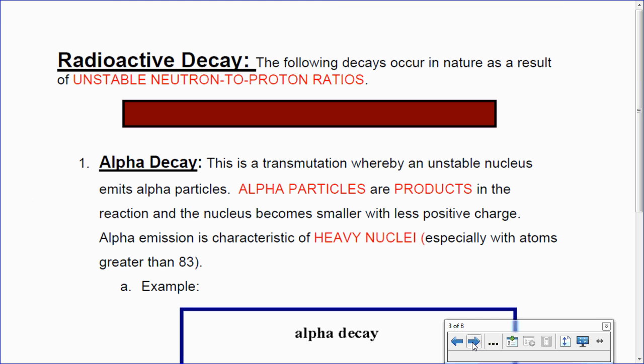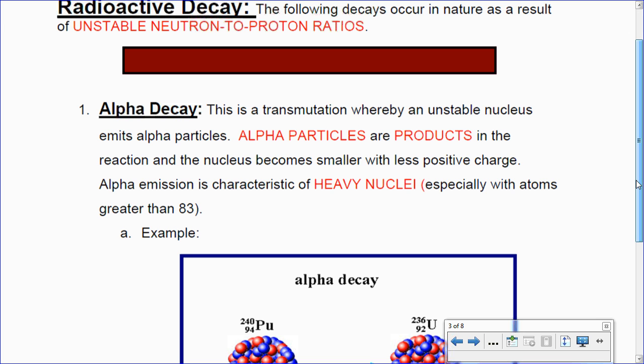We're going to look at those more in depth. So radioactive decay. The following decays occur in natural as a result of unstable neutron to proton ratios. Alpha decay. That's the first mode of decay. It's a transmutation where an unstable nucleus emits alpha particles. And there's a symbol for alpha particles. There's two, actually. 4-He-2, or 4-alpha-2.